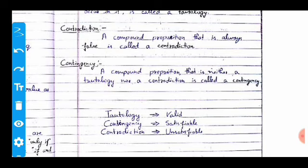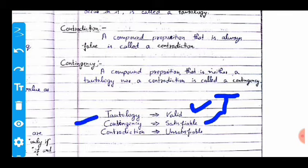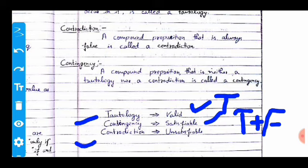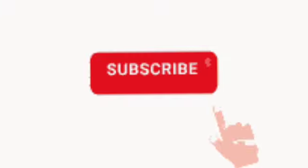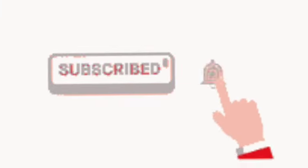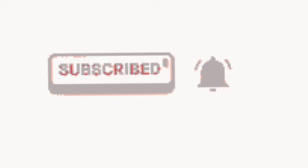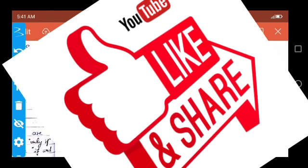A tautology is also called valid, because it is always true. A contingency is also called satisfiable, because it contains both true and false values. A contradiction is called unsatisfiable, meaning the output is always false. That concludes this session — if you haven't subscribed to this channel, please subscribe, like, and share the videos. Thank you and have a nice day.